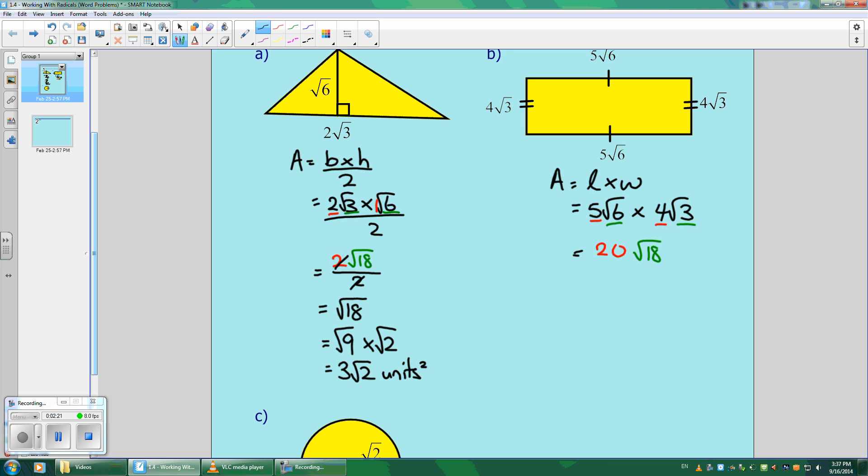Root times root gives me the root. And again, if you can break down that 18, which we did before, do it. Because that'll give you the simplest form. Square root of 9 is 3. And then the whole numbers multiply with whole numbers. And then the roots with the roots. And there is no other root. So we just leave it at the back. Units squared.